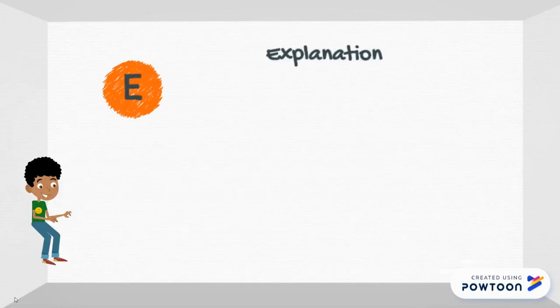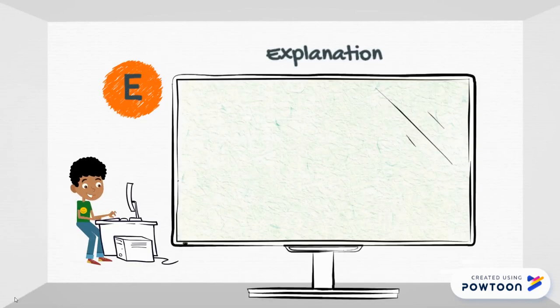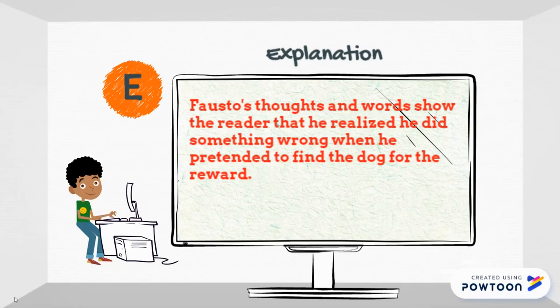Now my explanation. Obviously, he knows the difference between right and wrong because his thoughts and words show that he realized he did something wrong.